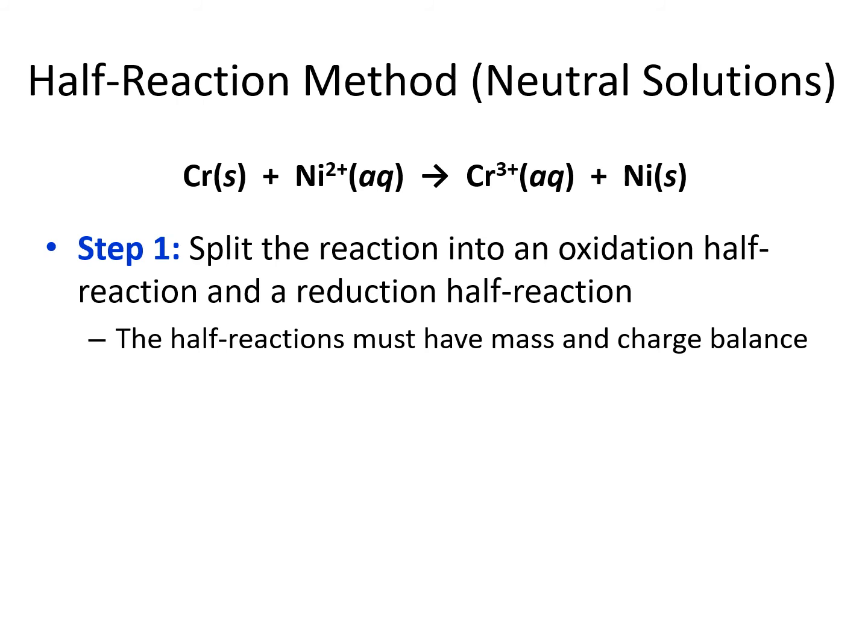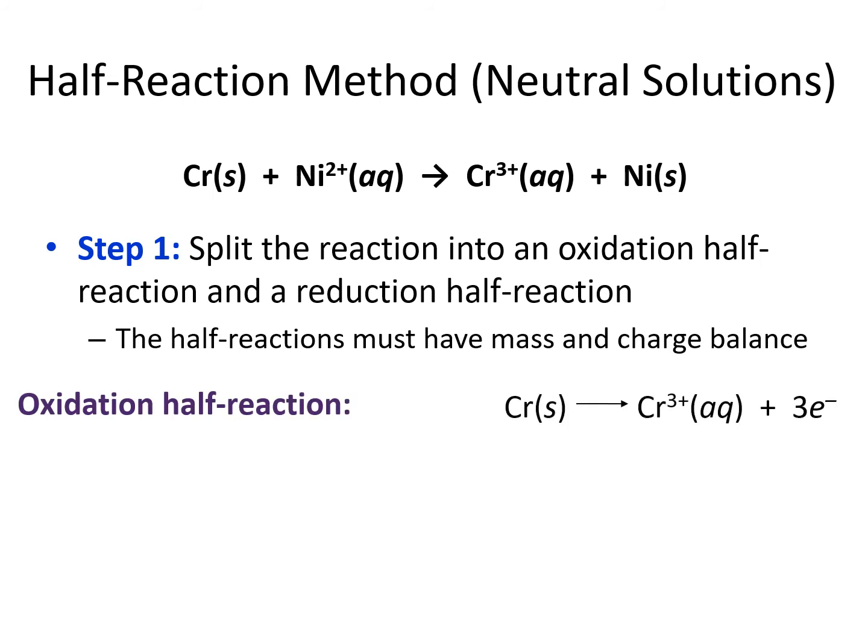To balance redox reactions for neutral solutions, we're going to have three steps. Our first step is to split the reaction into an oxidation half-reaction equation and a reduction half-reaction equation. Each of these half-reaction equations must have the masses and the charges balanced. In this example, we're going to focus on chromium in the oxidation half-reaction. Chromium is going from chromium solid on the left to chromium 3+ on the right, written the same way as in our original equation. Then we put in the electrons to make the charge balance — if we have a plus 3 on the chromium ion, we need 3 electrons to make it equal zero, just like the neutral solid on the left. So chromium solid goes to chromium 3+ plus 3 electrons.